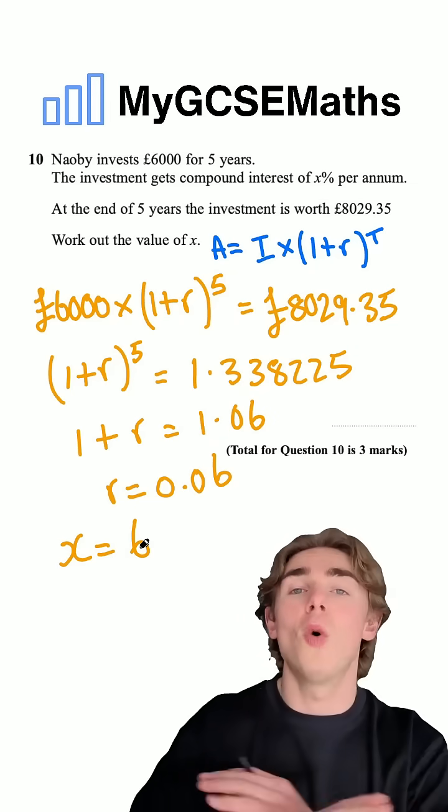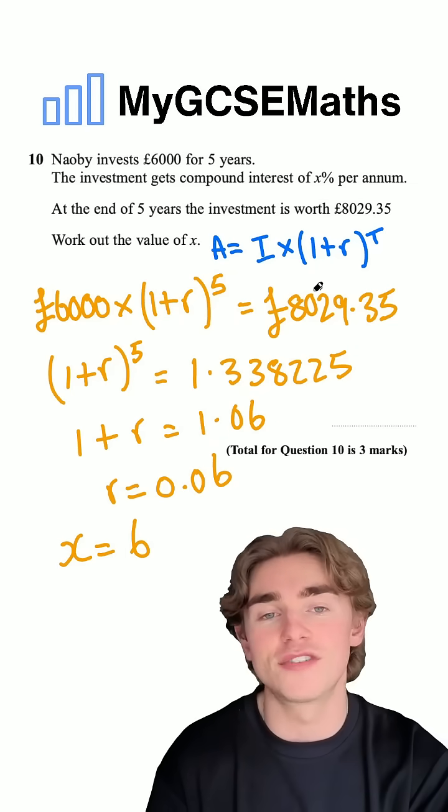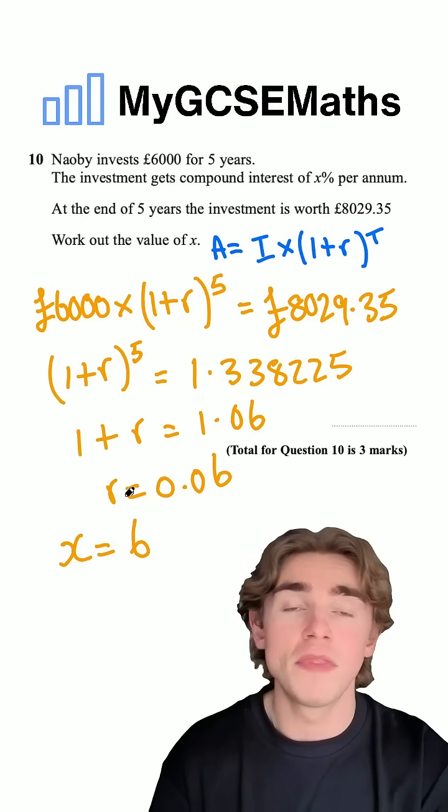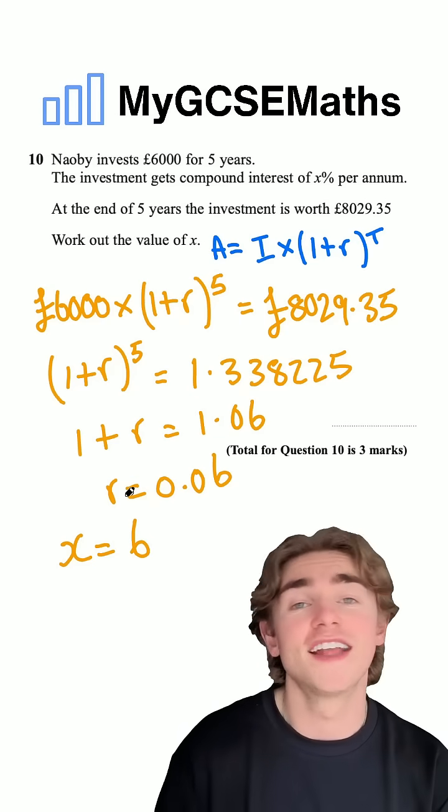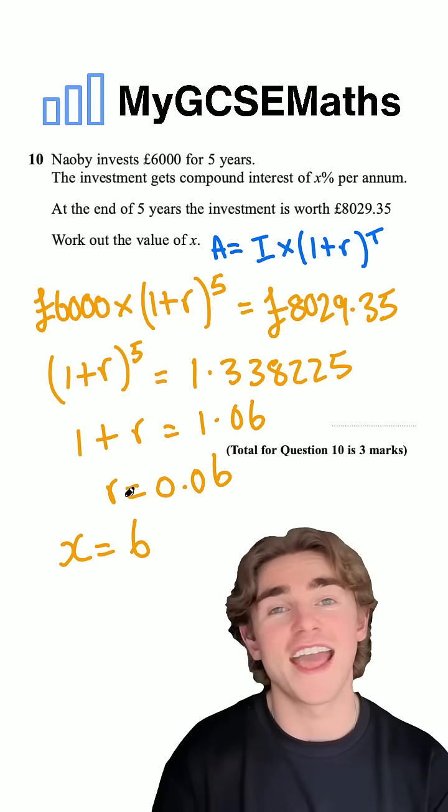So what we did was we wrote out all of our information in the compound interest formula, rearranged to find the value of R and then multiplied it by 100 to get our interest rate as a percentage.